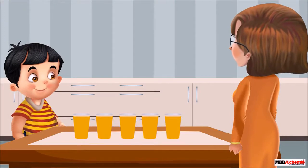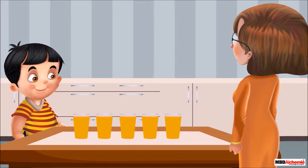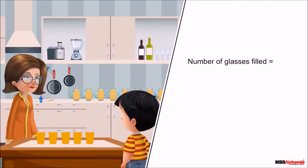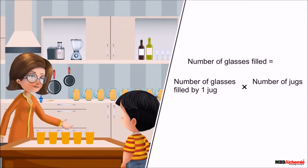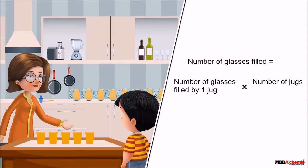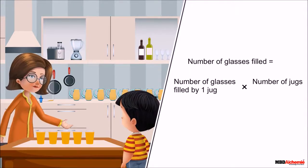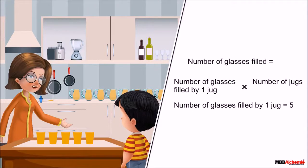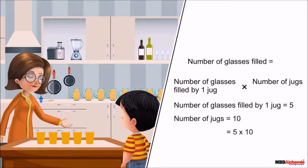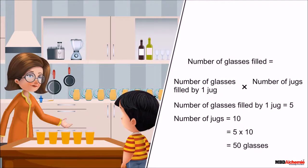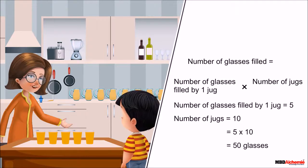Mother replies, the multiplication of capacity is the same as numbers, and we can find it as number of glasses filled equals the number of glasses filled by one jug multiply by the number of jugs. Number of glasses filled by one jug equals 5. The number of jugs equals 10. 5 multiply by 10 equals 50. So they can serve 50 glasses from 10 jugs of juice.